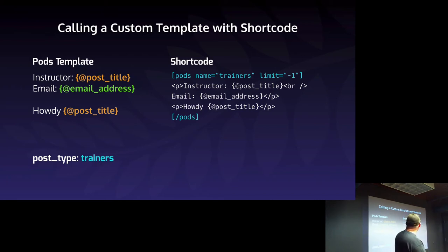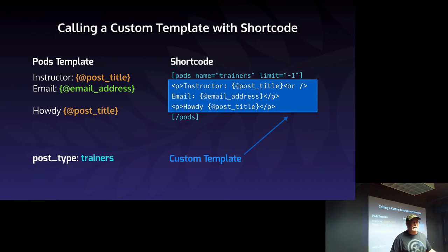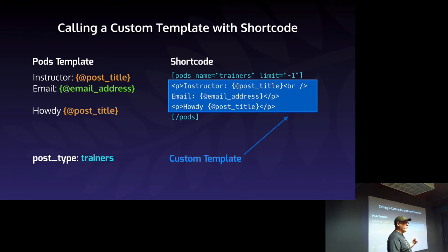I'm creating the shortcode and closing it off with a slash-pods, putting all the template information in between. That content in between is called a custom template. When you're prototyping and testing, you can very quickly on a WordPress page just start typing — create the start of the shortcode, the end, put some fields in between, publish, and look at the page to see if it worked.